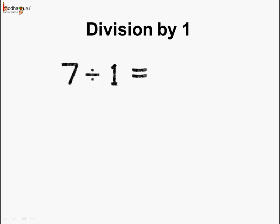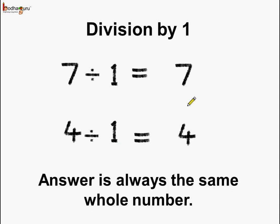Now let us see division by 1. What is 7 divided by 1 equal to? It is equal to 7. Now what is 4 divided by 1 equal to? It is equal to 4. So what can we say? We can say when we divide a number by 1, the answer is always the same whole number.